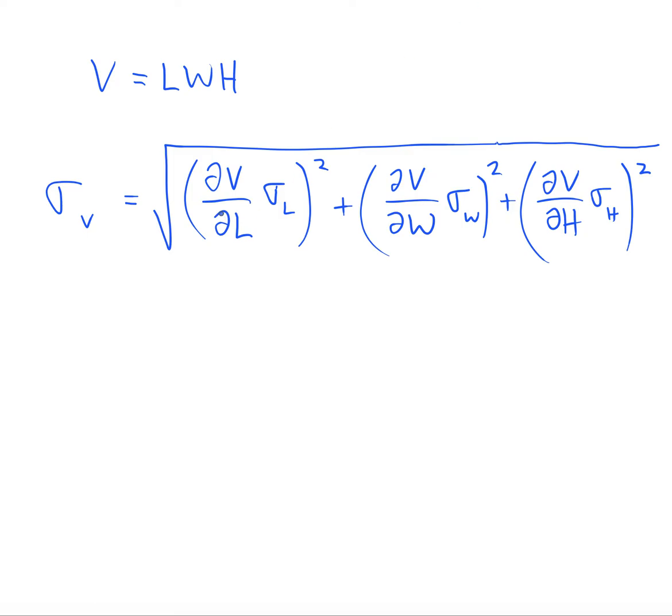So we have to take a partial derivative of V with respect to L. That means that we treat all other variables as if they were constants, as if they were numbers perhaps. So just imagine if this was like L times 2 times 3. Then what would be the derivative? You would eliminate your L variable and just keep the constants, right? So that's actually going to be our partial derivative with respect to L.